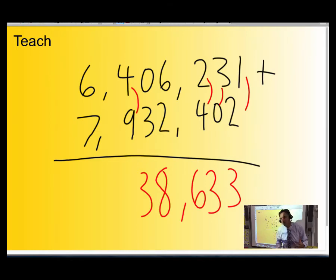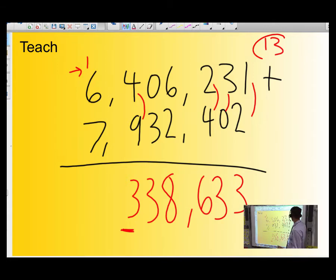4 and 9 equals 13. So you put down the 3, the 3 of the 13, and you carry the 1, which is really the 10. You don't just write down 13, do you? You put down the 3, there it is, and you carry the 1.